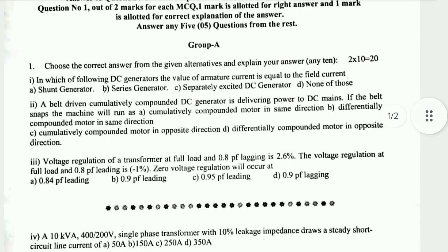Question 2: A belt-driven cumulative compound DC generator is delivering power to DC mains. If the belt snaps, the machine will run as a cumulative compound motor in the same direction. If it were differentially compounded, the behavior would be slightly different.